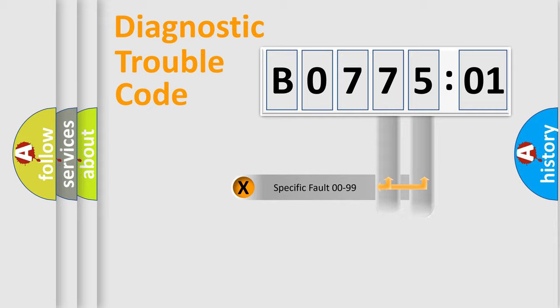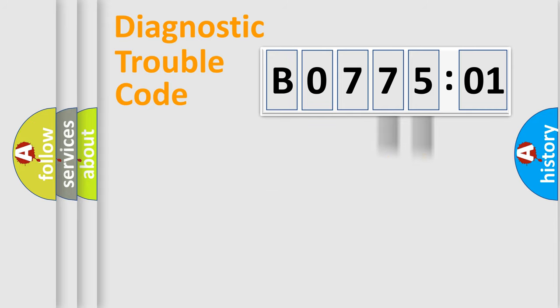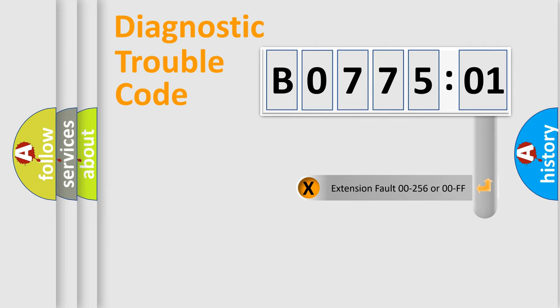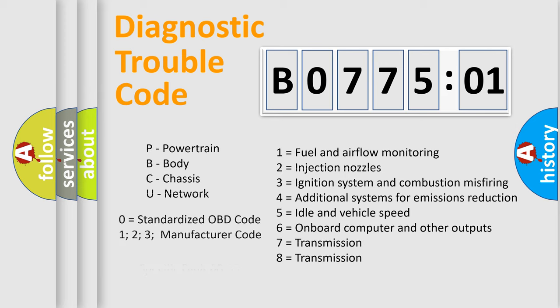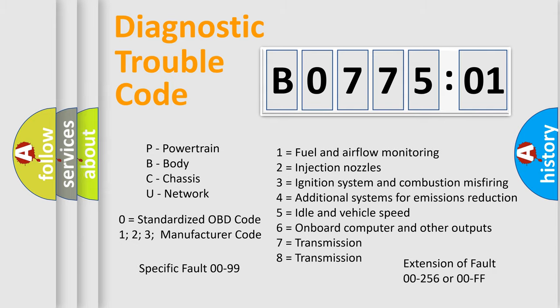Only the last two characters define the specific fault of the group. The add-on to the error code serves to specify the status in more detail — for example, a short to ground. Let's not forget that such a division is valid only if the second character code is expressed by the number zero.